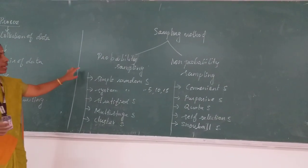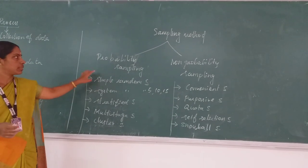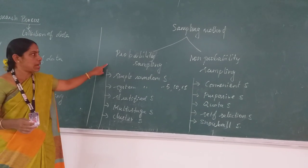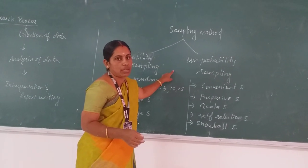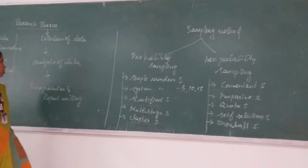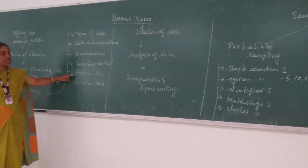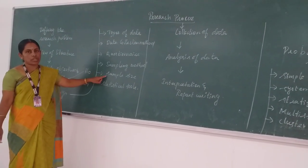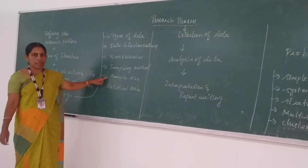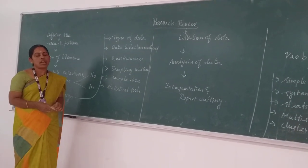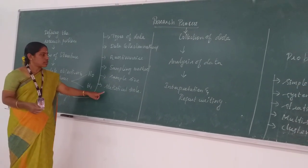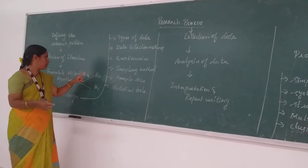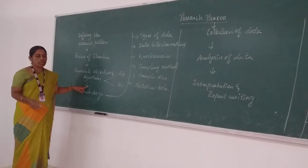We use probability sampling when we know the population size, and non-probability sampling when we do not know the population. For sample size, when the researcher knows the population they calculate it using a formula; when they don't know the population they choose the sample size according to their own judgment. The researcher also determines the statistical tools based on the objectives and hypothesis of the study.